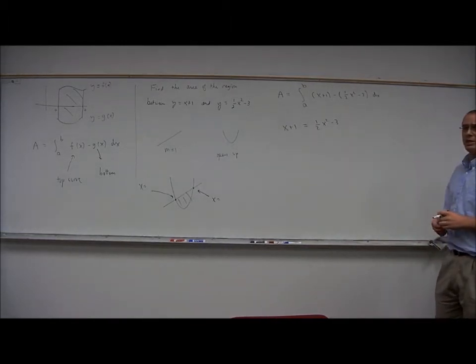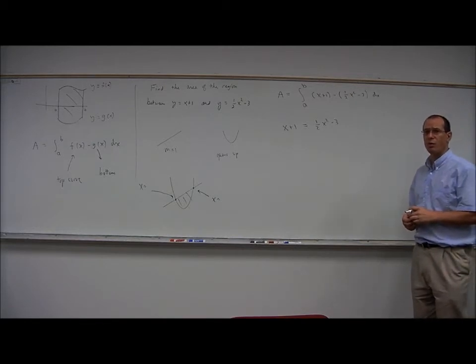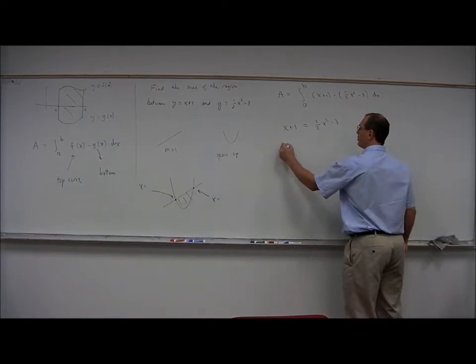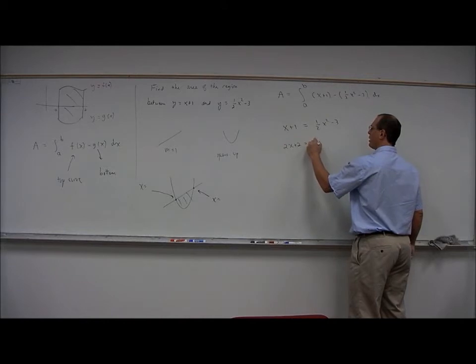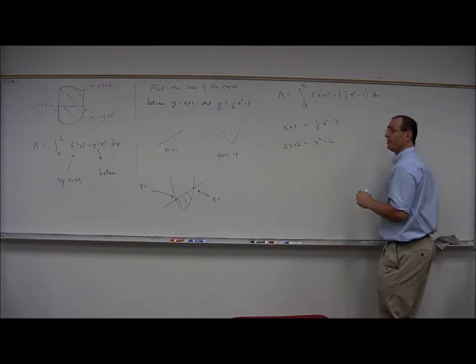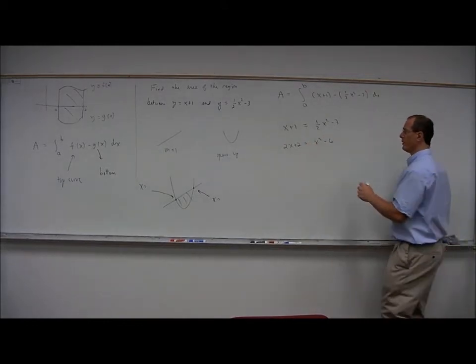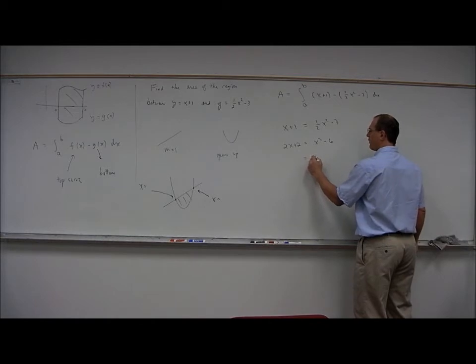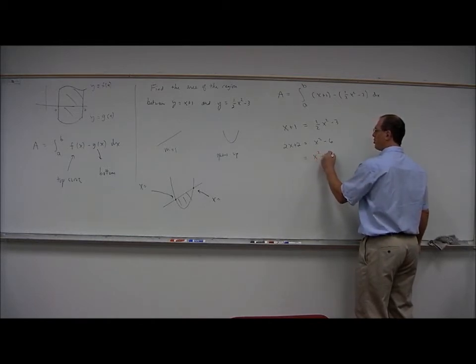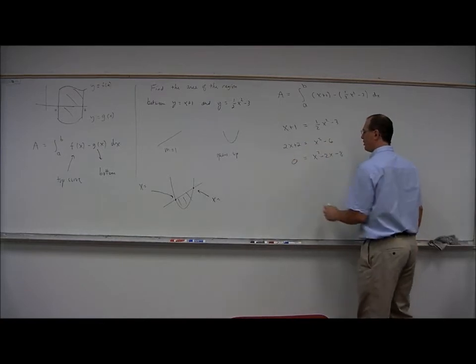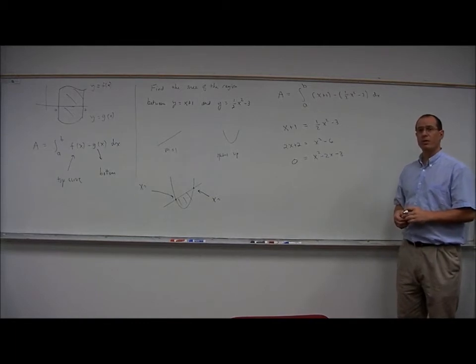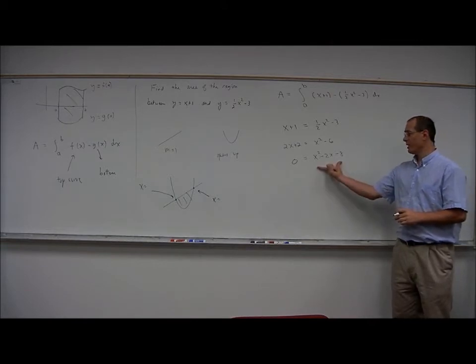To do this, we'll write it as a quadratic equation in standard form. Let's begin by multiplying both sides by 2. So 2x plus 2 is equal to x squared minus 6, just to clear the equation of fractions. Then we'll move all the terms to the right side to get a positive coefficient of x squared. So x squared minus 2x minus 8 is equal to 0.